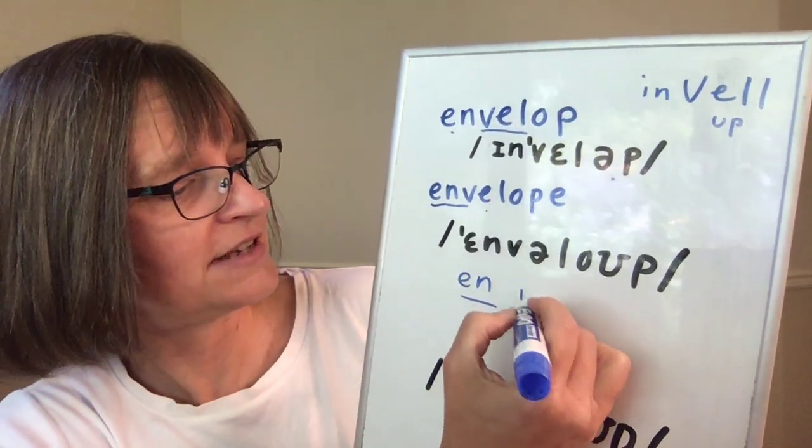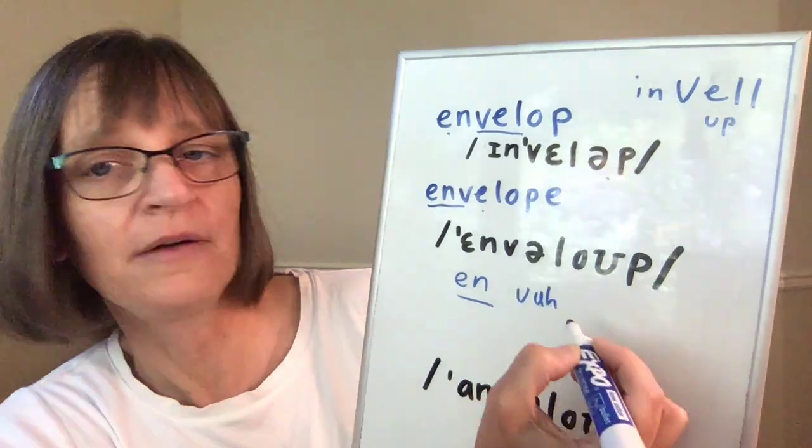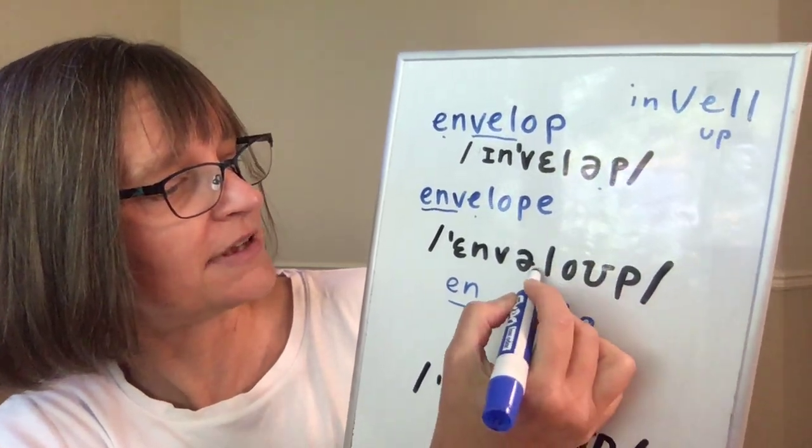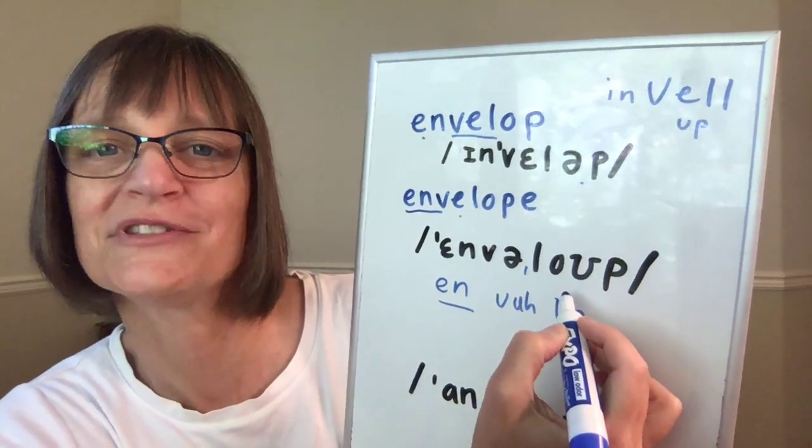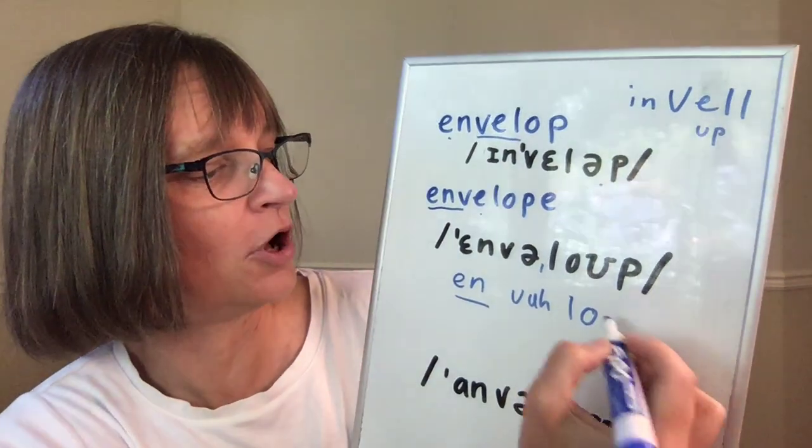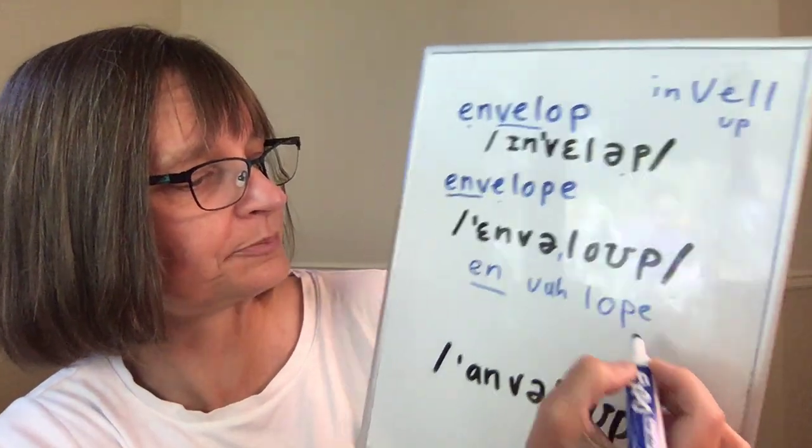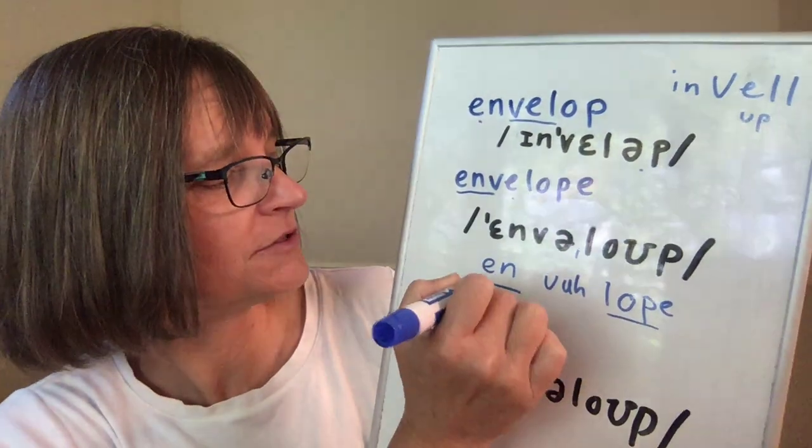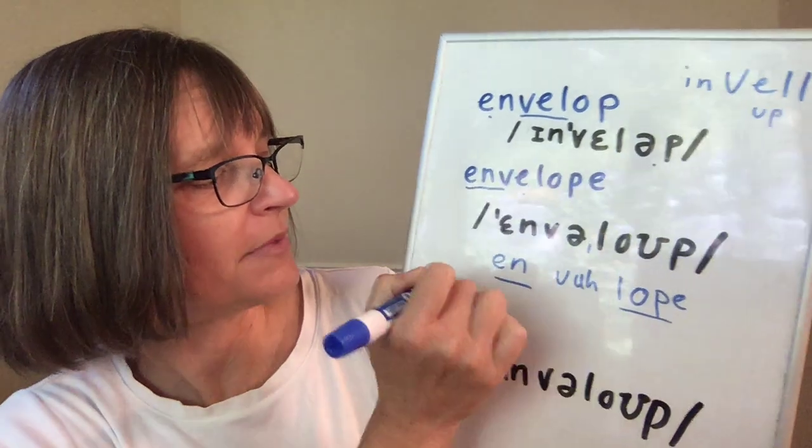The second E then says the vowel schwa, it sounds like vuh, and we have secondary stress on this lope syllable. So it has the clear vowel o, envelope. Lope is a word as well. So I want long, short, short, envelope.